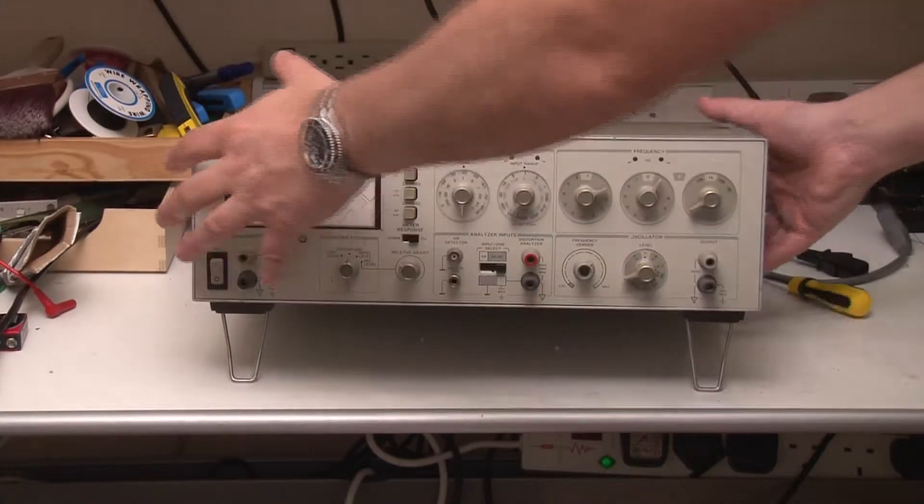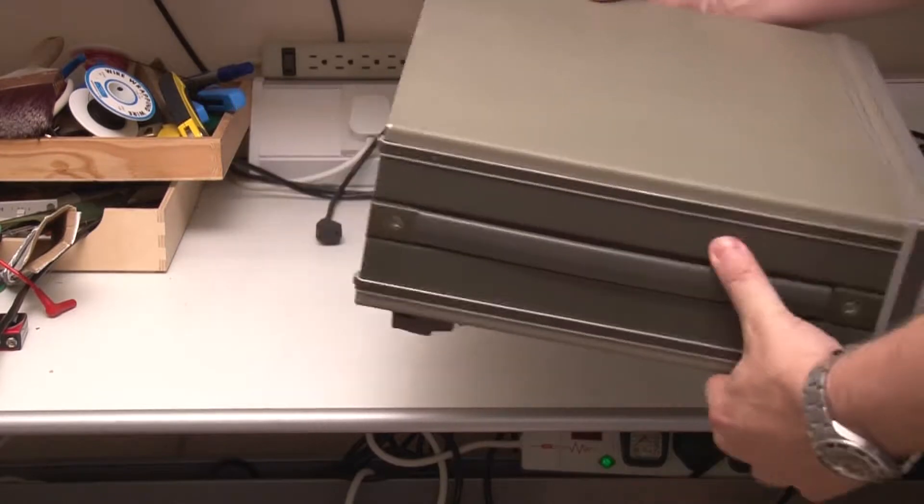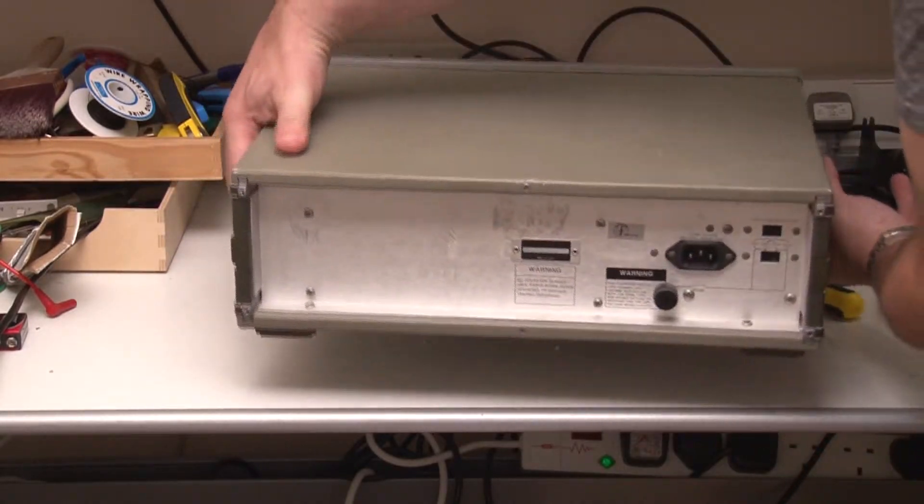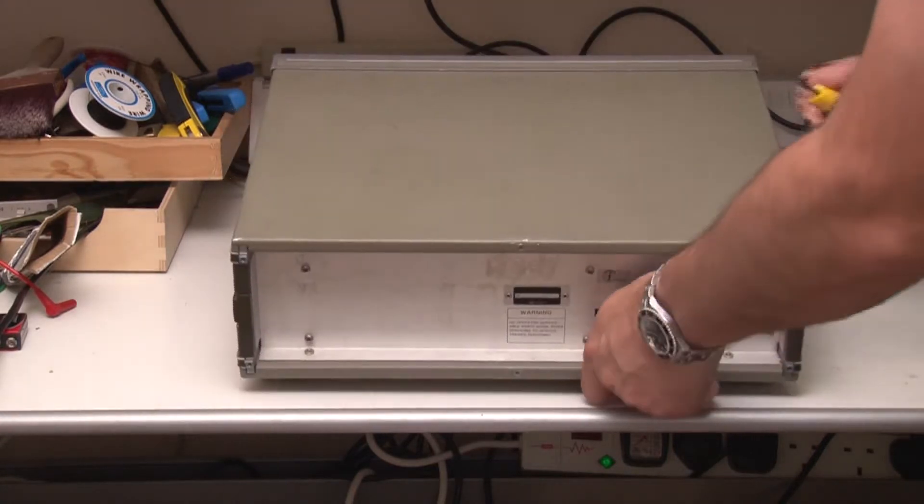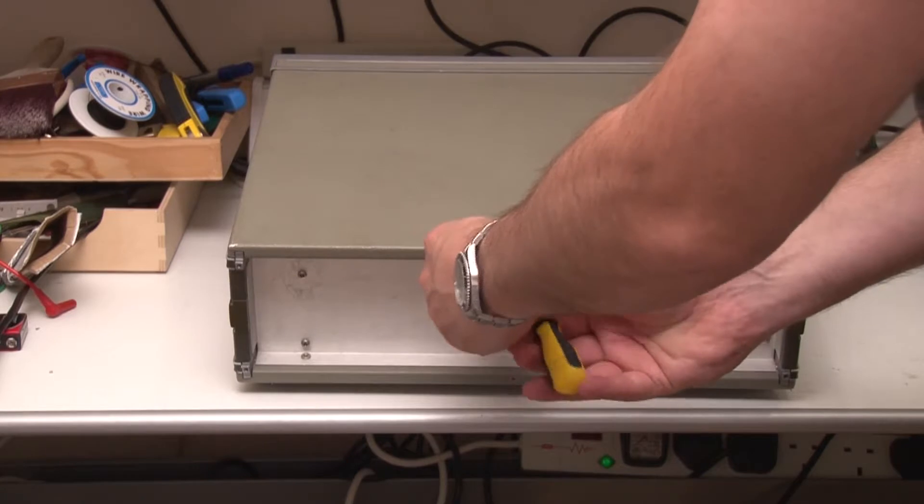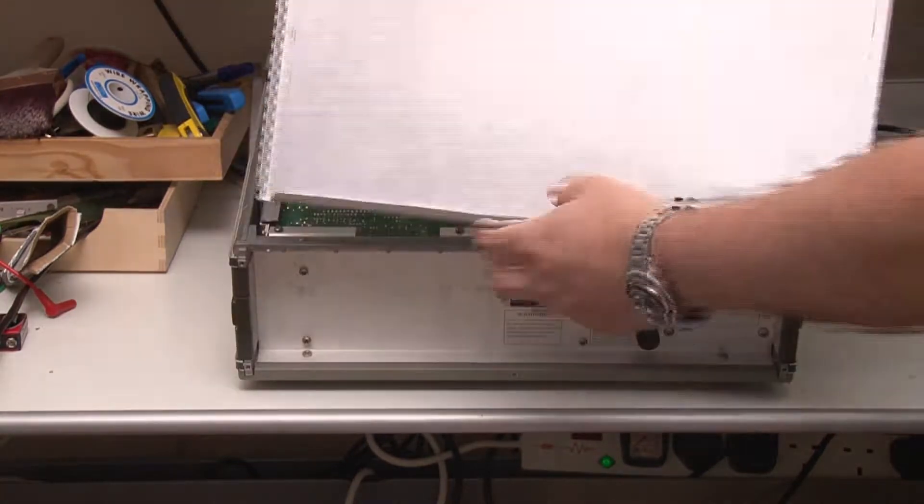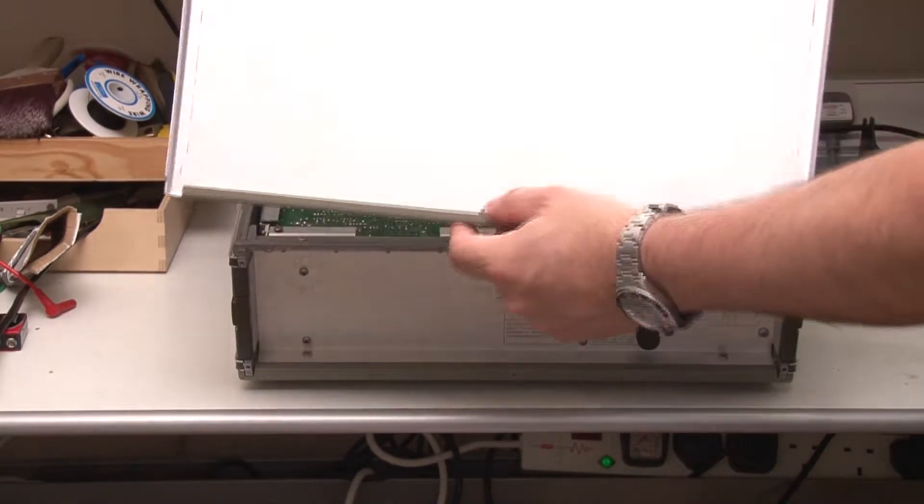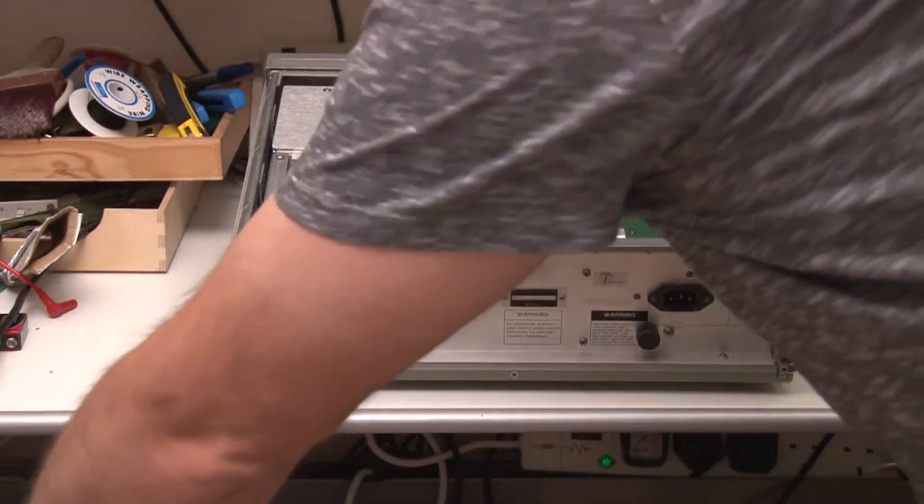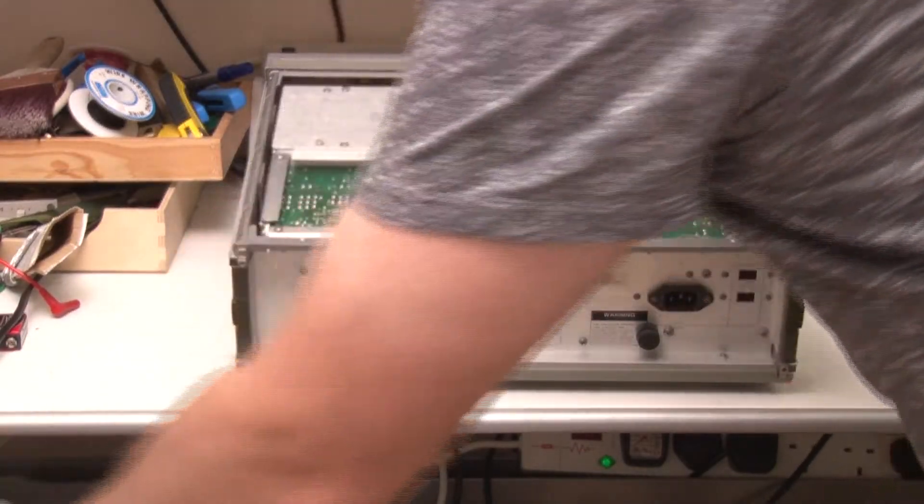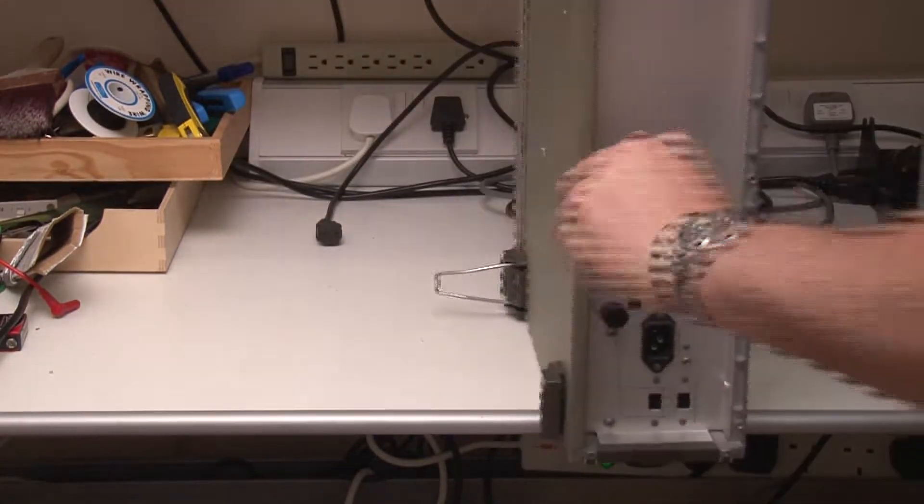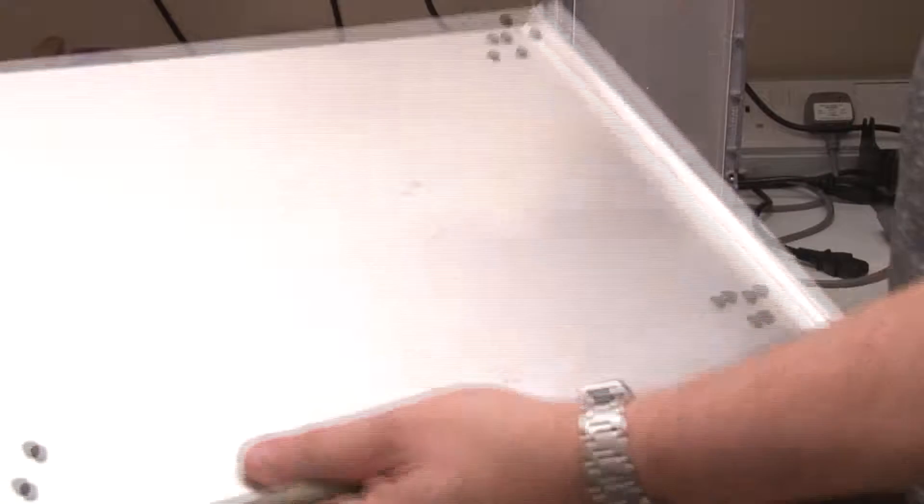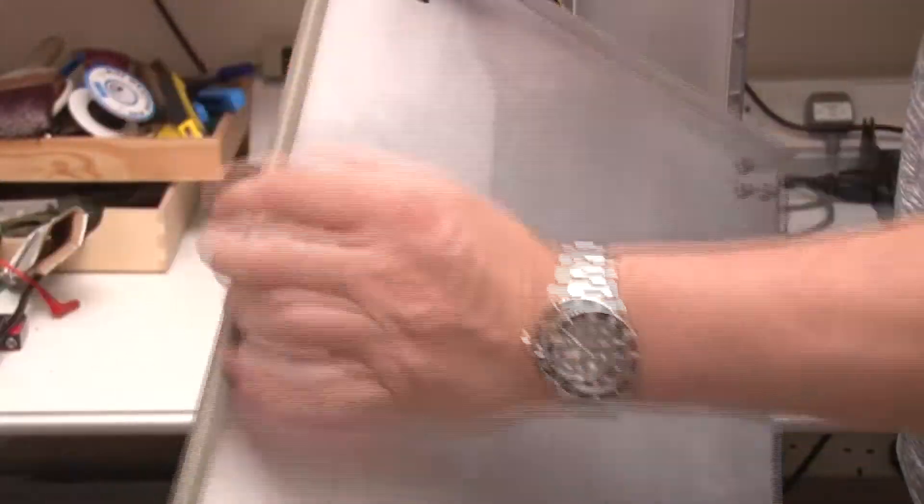So to get this apart, it's pretty easy. I've just got a screw here and a screw here that removes the top and the bottom respectively. Let's just take off the top. Really nice captured screw there so you don't lose the screw. Very easy, very easy to service. Let's just remove the bottom as well. And again, the base, nice folded aluminum. Really nice construction, captured screw.